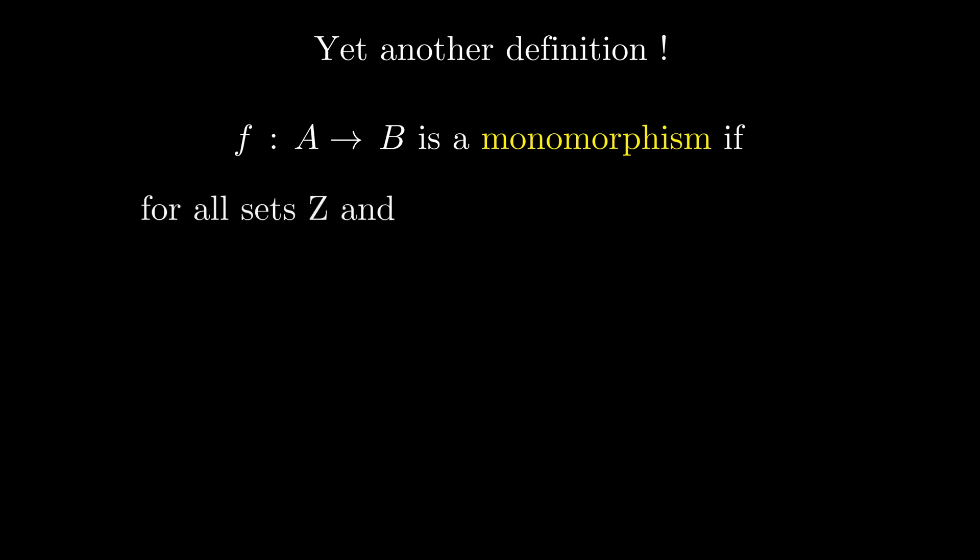But what if I told you that there is yet another way of defining injections and surjections? It looks weird, but bear with me. A function is a monomorphism if for any set Z and for any functions alpha and alpha prime going from Z to A, equality of their right composition with F implies their equality. Take your time to grasp the definition.